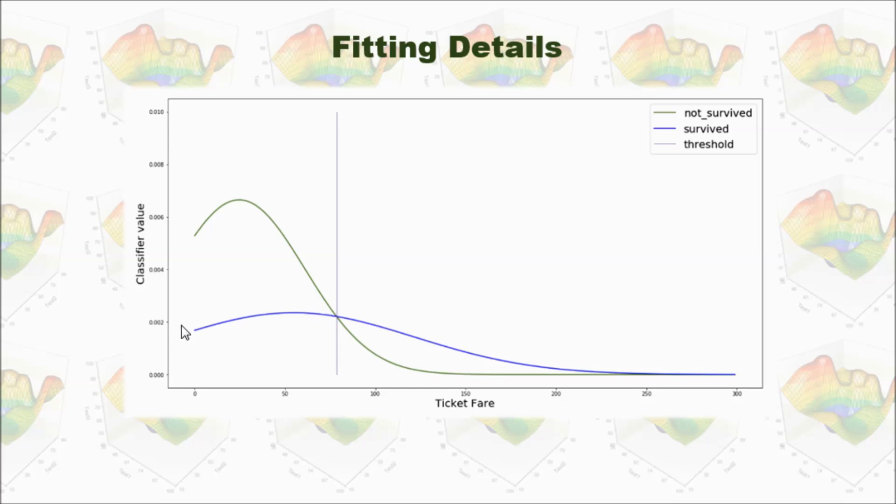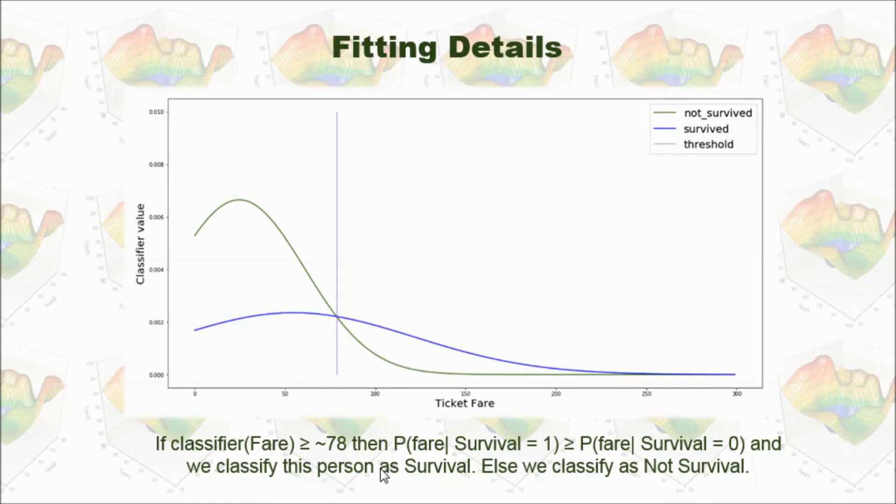If lower than this point, most likely we can't survive. So, this data point is about 78. That is a borderline between survived and not survived.